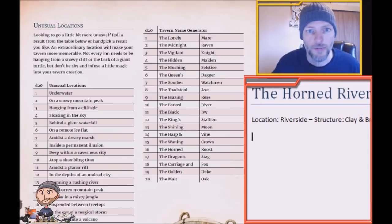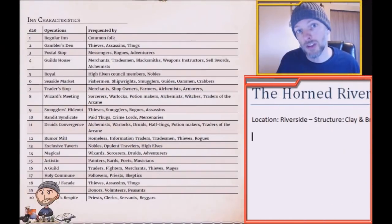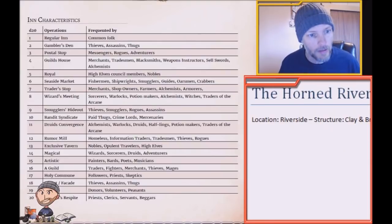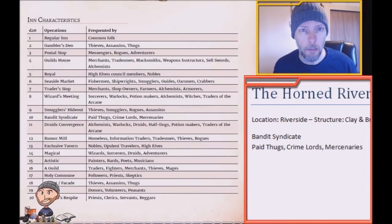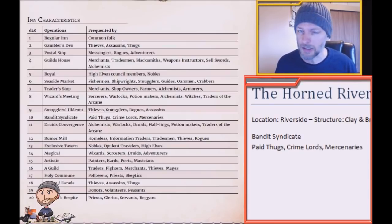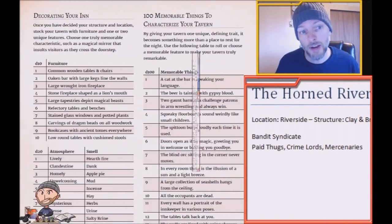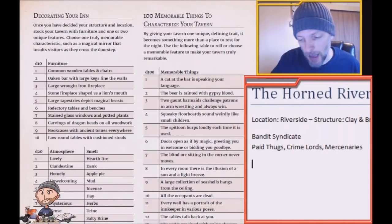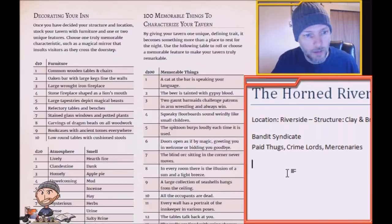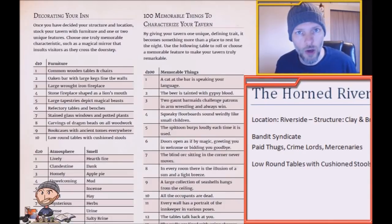Next we're going to determine our inn's characteristics using our d20. We rolled a 10, so the Horned River is a bandit syndicate — it has paid thugs, crime lords, and mercenaries. Starting to be a little bit of a dark place to visit! Next we're going to decorate our inn using a d10, and we got a 10, which is low round tables with cushioned stools.